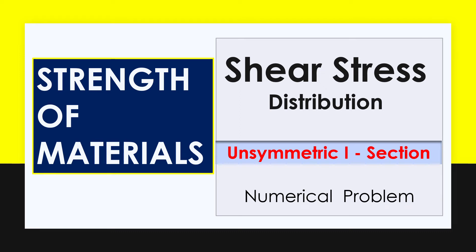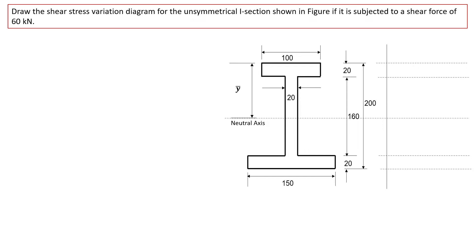In this short video lecture, we are going to solve a numerical problem where we have to draw the shear stress variation diagram for an unsymmetrical I-section as shown in the figure, when it is subjected to a shear force of 60 kN.